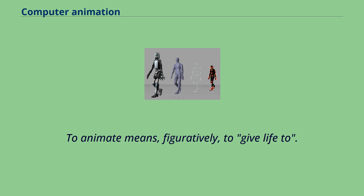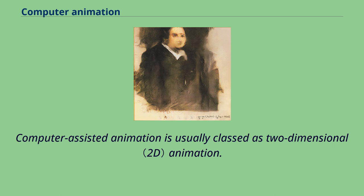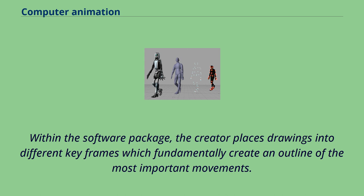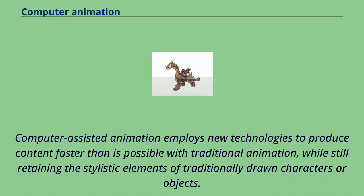To animate means, figuratively, to give life to. There are two basic methods that animators commonly use to accomplish this. Computer-assisted animation is usually classed as two-dimensional animation. Drawings are either hand-drawn or interactively drawn using different assisting appliances and are positioned into specific software packages. Within the software package, the creator places drawings into different keyframes which fundamentally create an outline of the most important movements. The computer then fills in the in-between frames, a process commonly known as tweening. Computer-assisted animation employs new technologies to produce content faster than is possible with traditional animation, while still retaining the stylistic elements of traditionally drawn characters or objects.